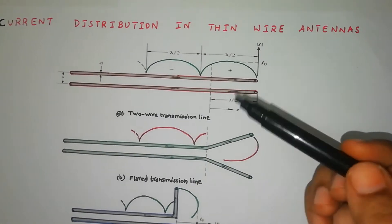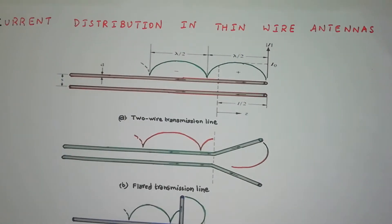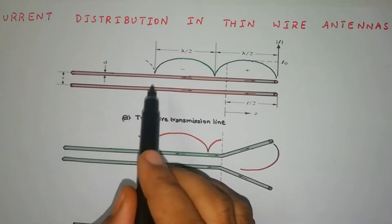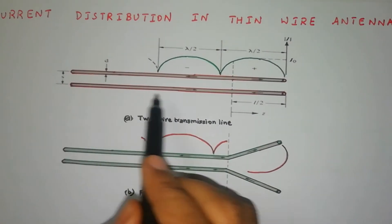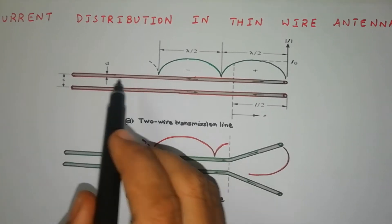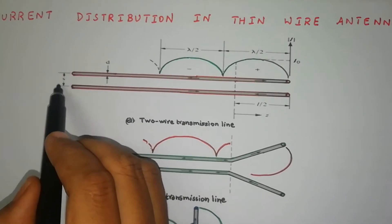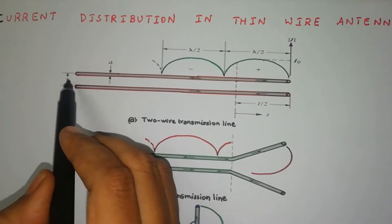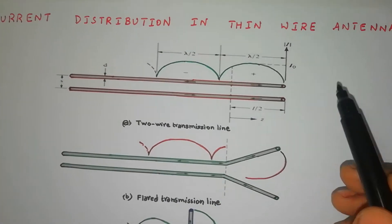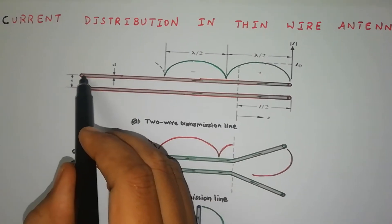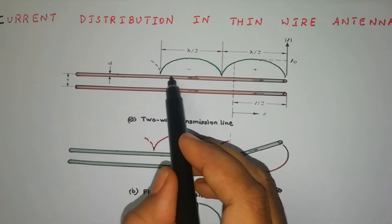We cannot go straight to the final antenna concept; we will go step by step. In the first diagram I have taken two pairs of transmission lines. A source will be present at one end and the other end is left as open. When we excite the source at this end, the current starts flowing.